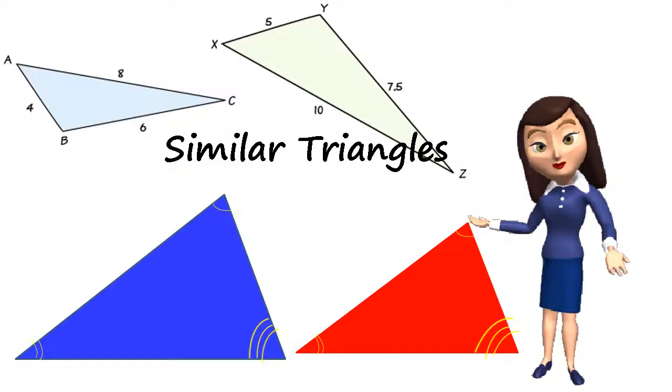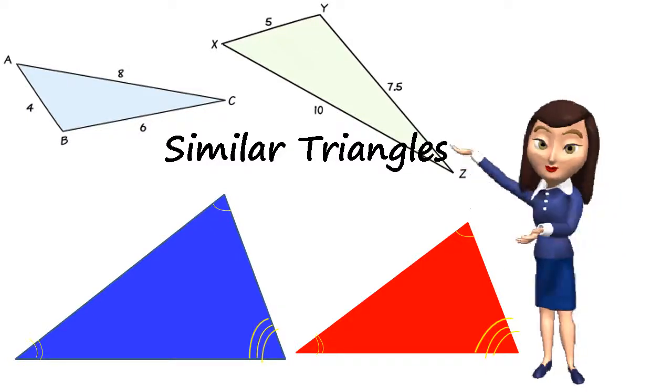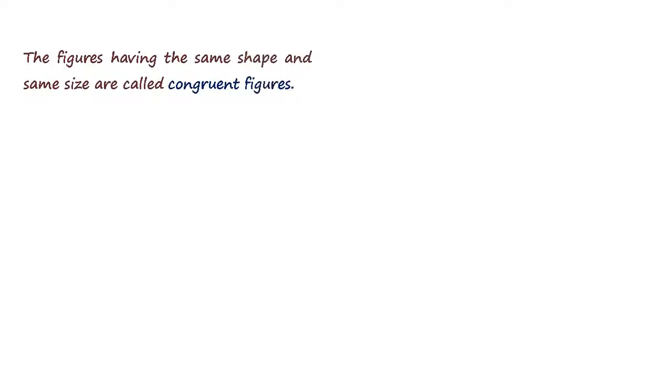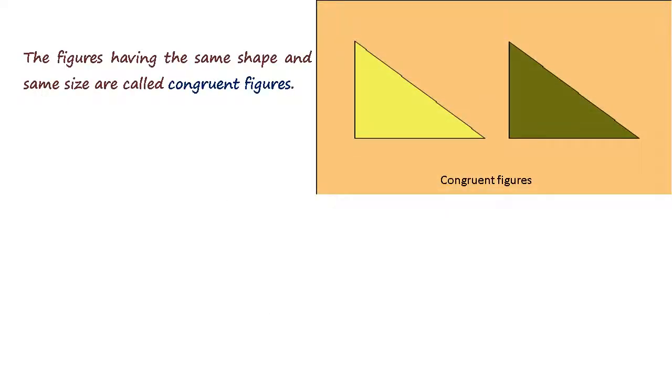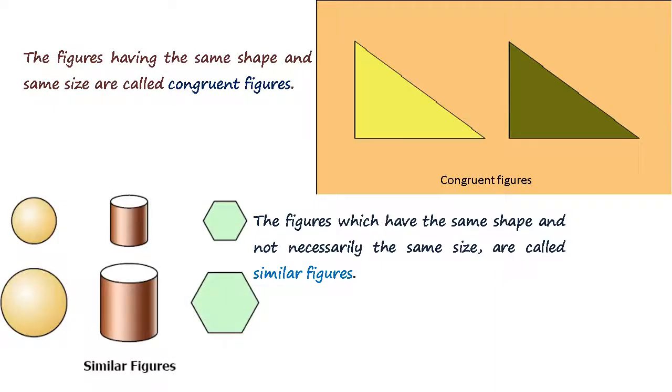Similar Triangles. Figures having the same shape and same size are called congruent figures. The figures which have the same shape and not necessarily the same size are called similar figures.